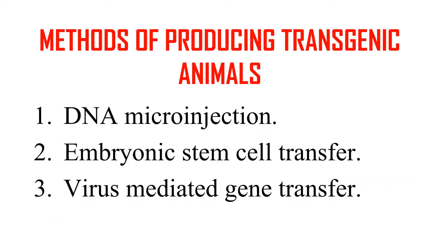Now, what are the different methods of producing a transgenic animal? Generally, DNA microinjection, embryonic stem cell transfer, and virus mediated gene transfer methods are used for producing transgenic animals.